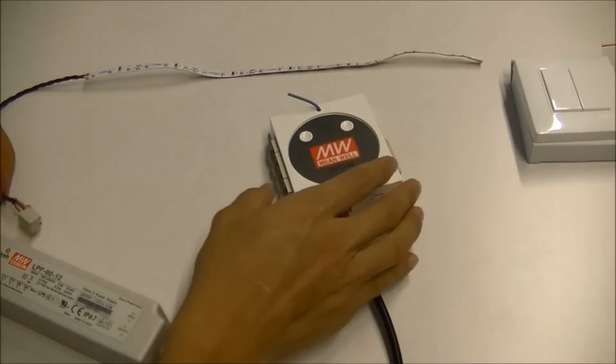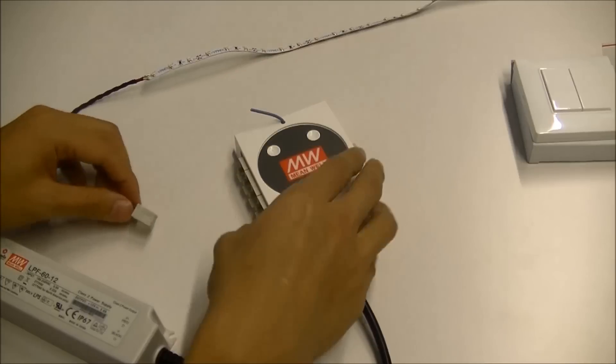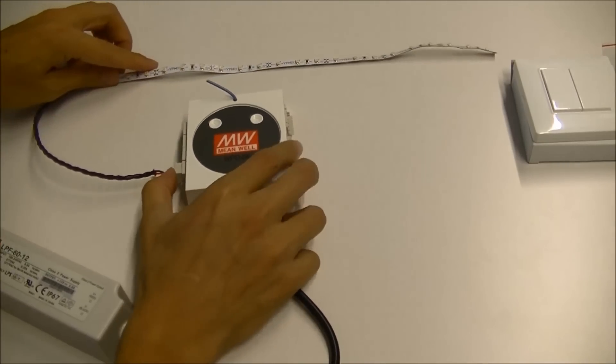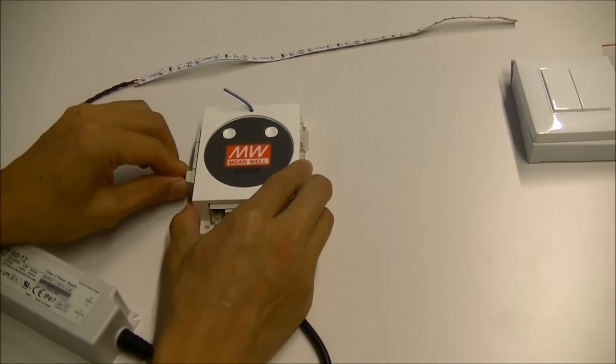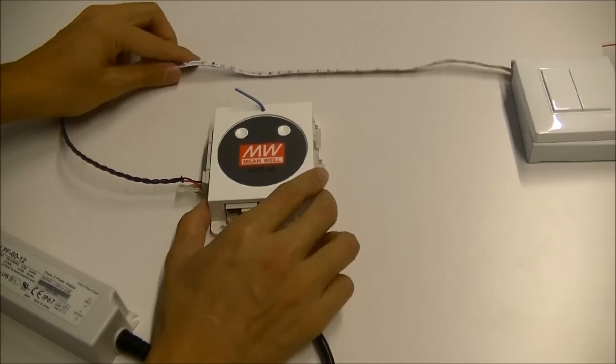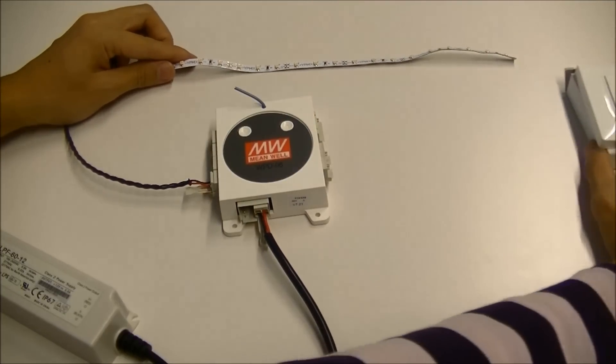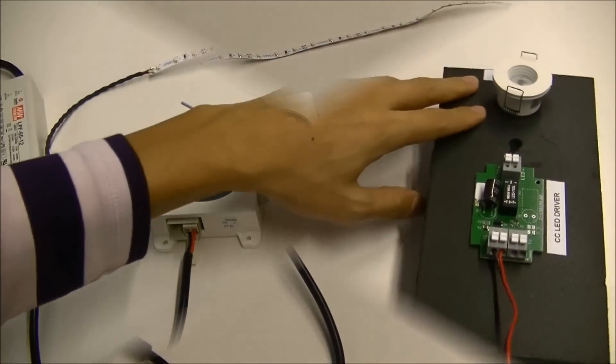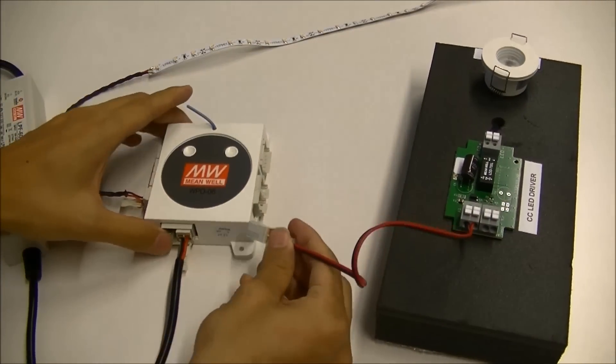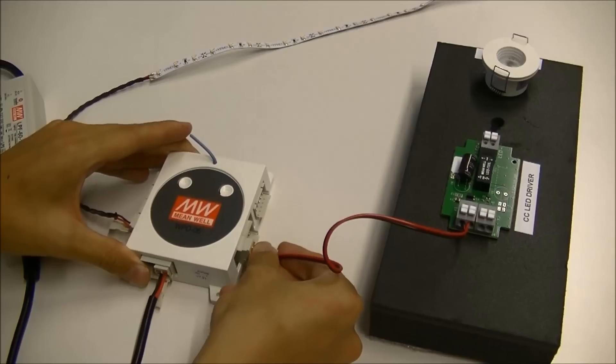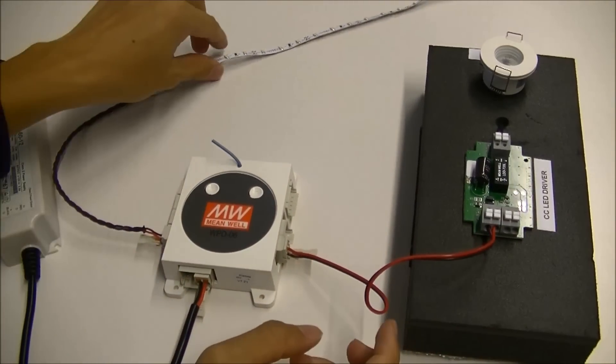Push the LED strip into the channel 1. Push the constant current LED lamp into channel 6. You would need a LED driver in between.